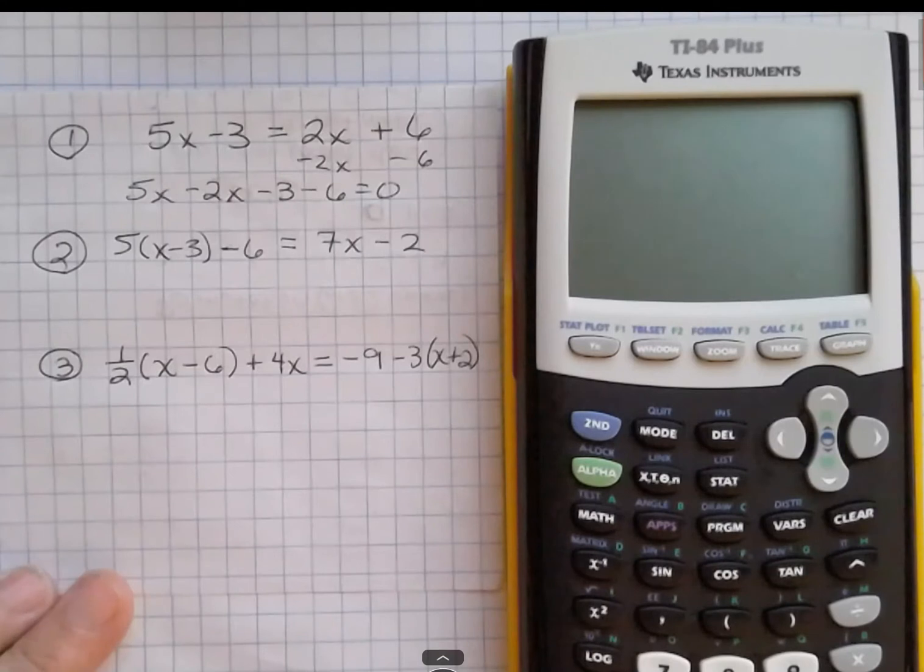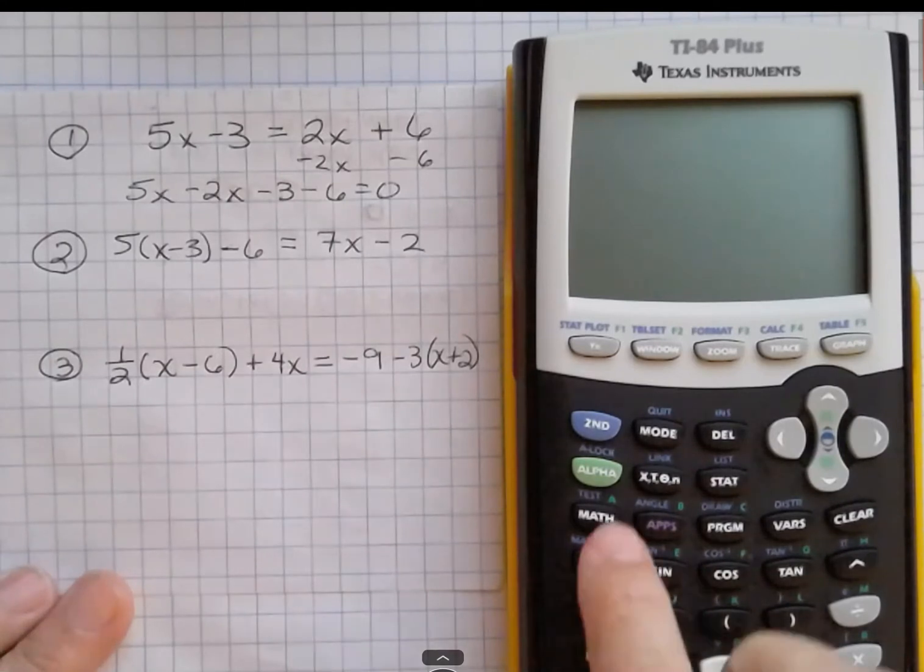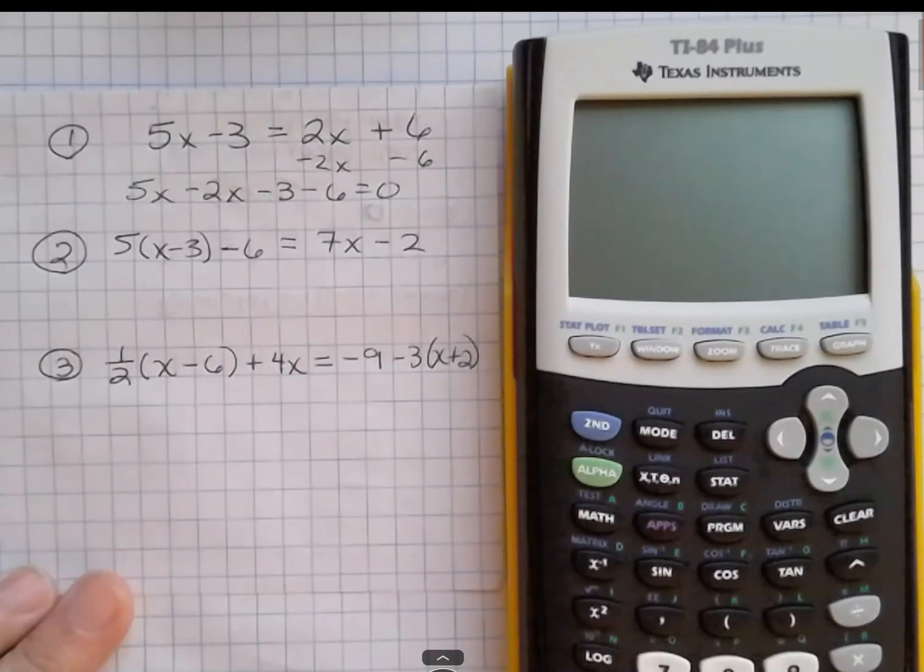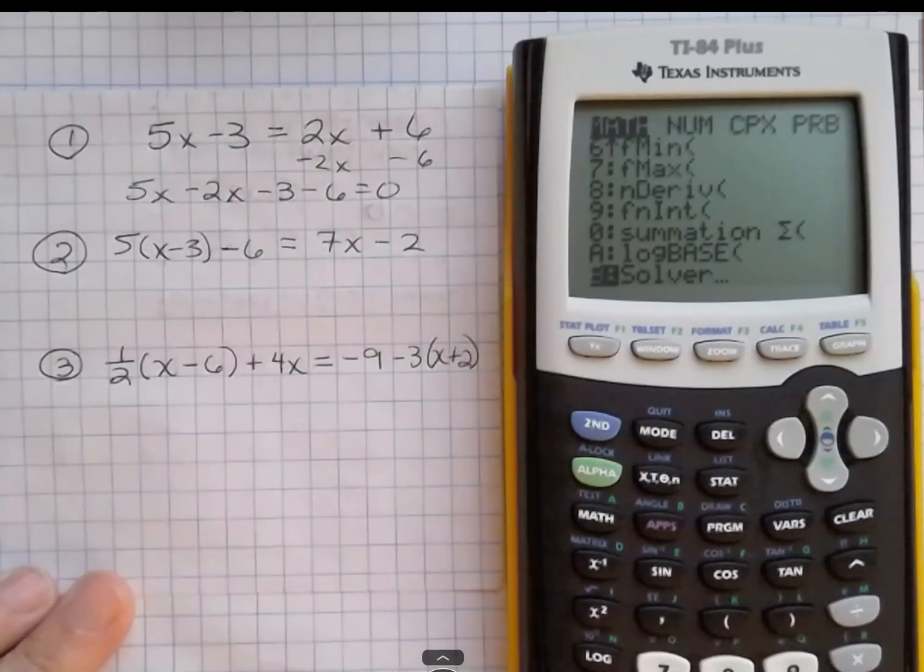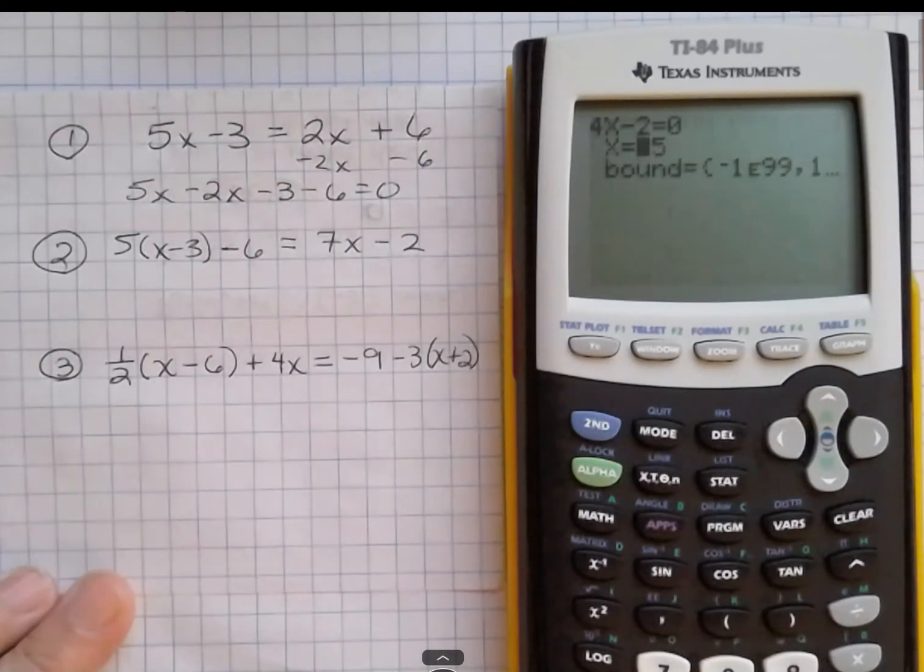So to do the calculator equations, you're going to hit on and then click on math. I guess I just turned it off, on, and then math, and then just go up one with the arrow key. You could go down, but it's quicker to go up until you get to solver and hit enter.